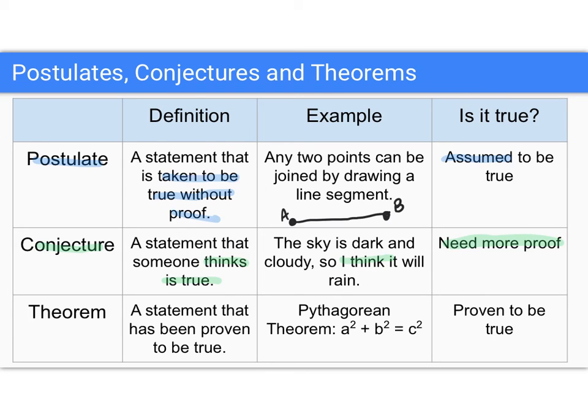Now, a theorem is something that we have proven to be true. A good example that you'll know is the Pythagorean theorem, that the squares of the side lengths of a right triangle sum to equal the square of the hypotenuse. Now, this is something that we've proven to be true. There's many, many different proofs of this theorem.